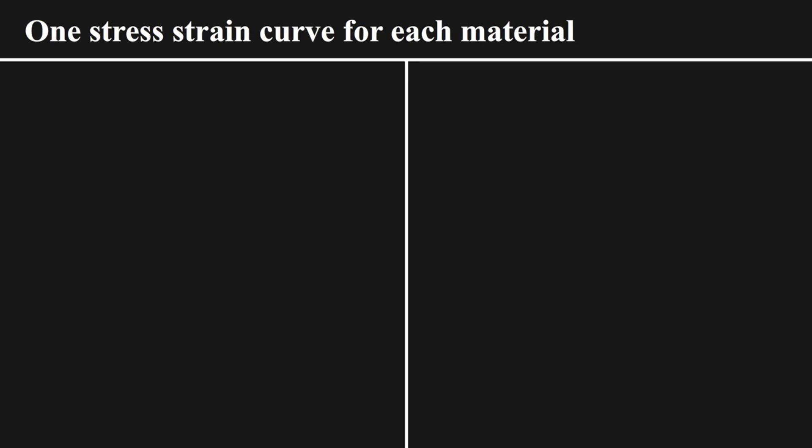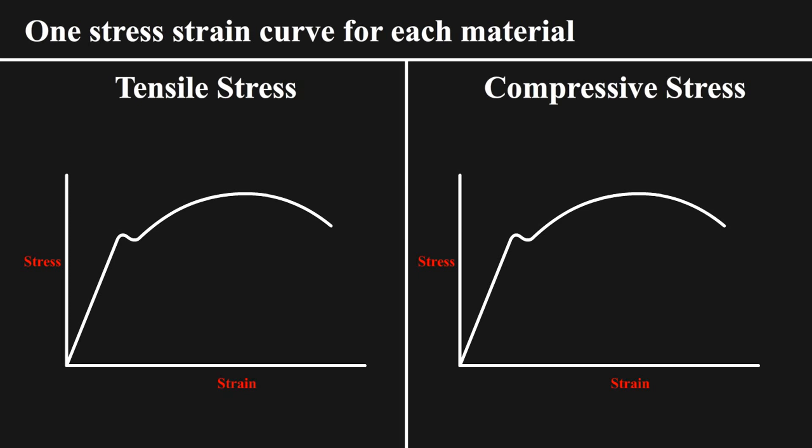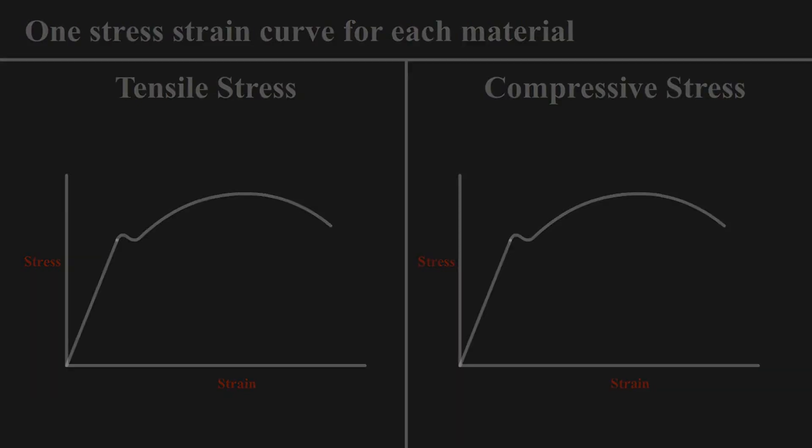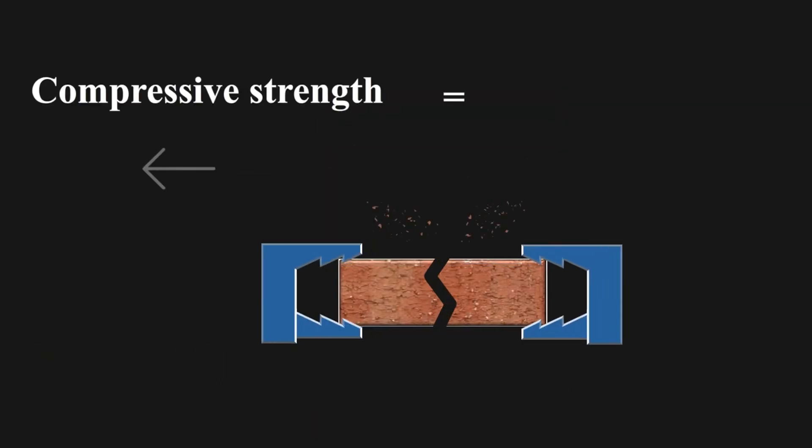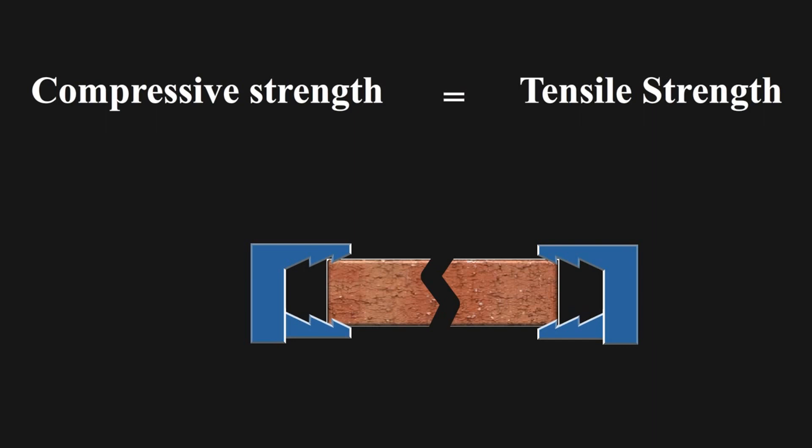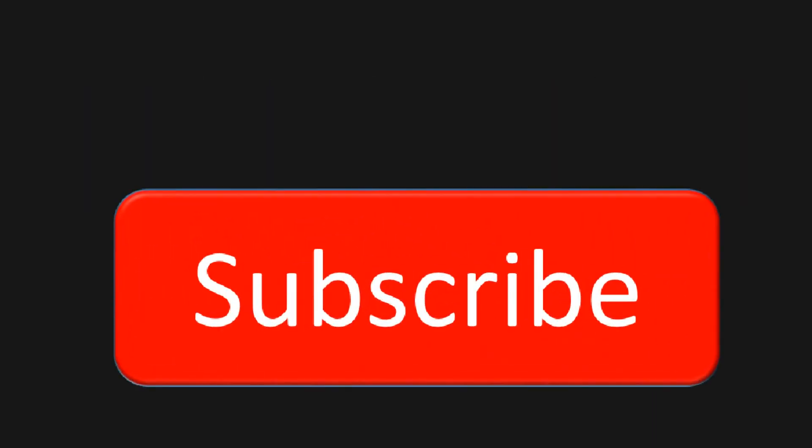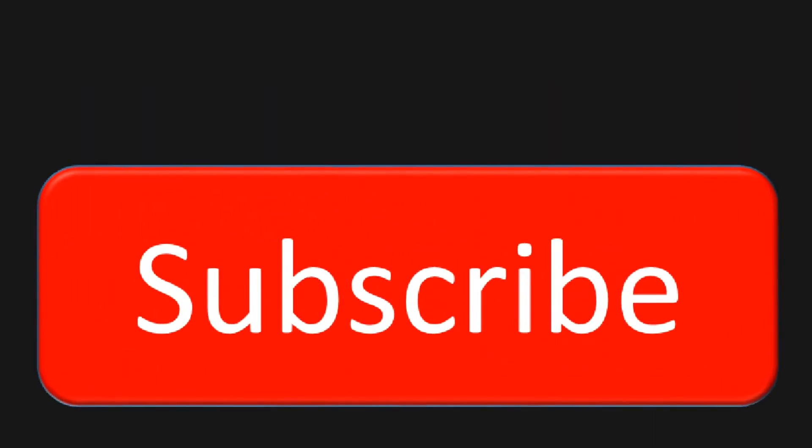Let's start with first misconception. One stress-strain curve for each material. Well, there are actually two graphs for each material. One is for tensile stress and other is for compressive strength. The curve might look same but values at different points are different. Think it this way. Do you really think that the compressive strength of a brick would be same as its tensile strength?